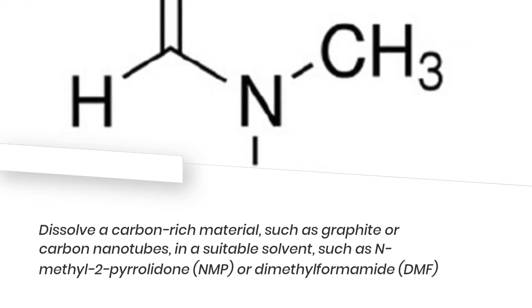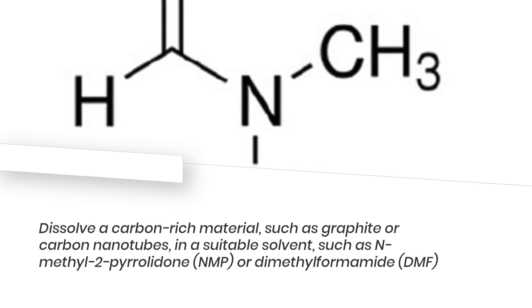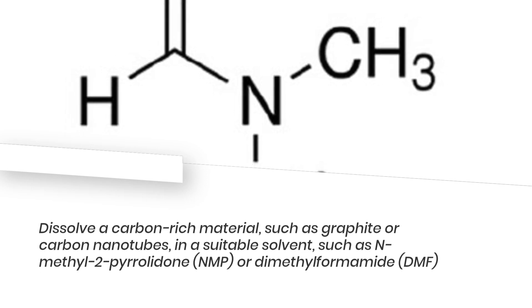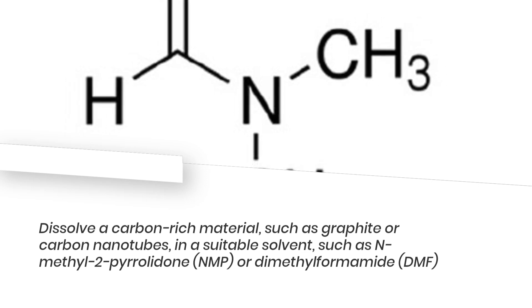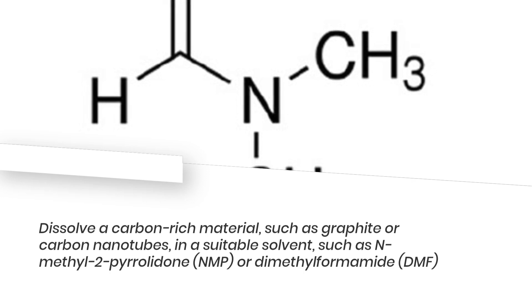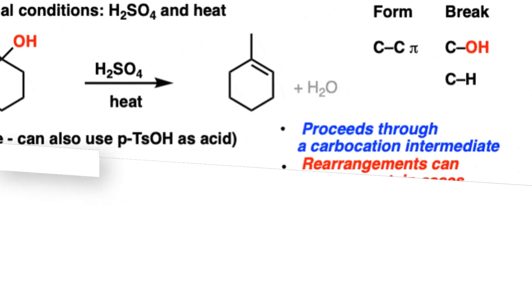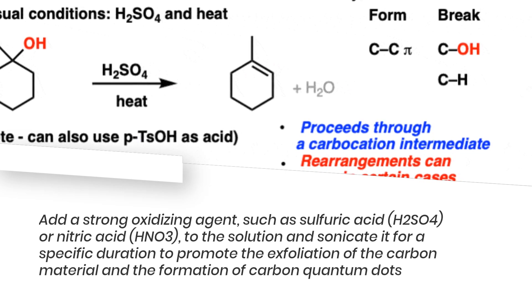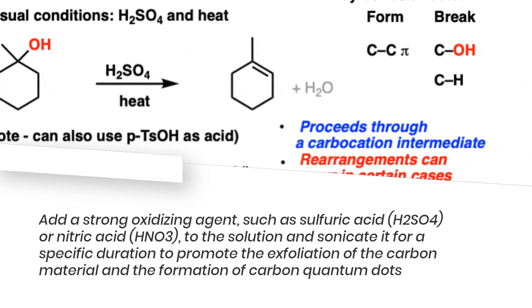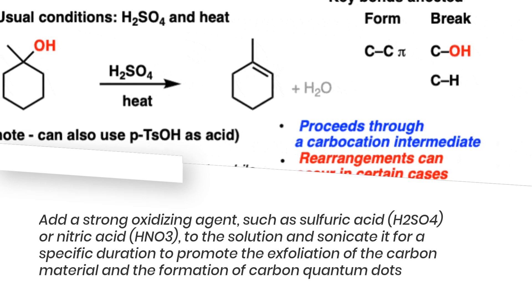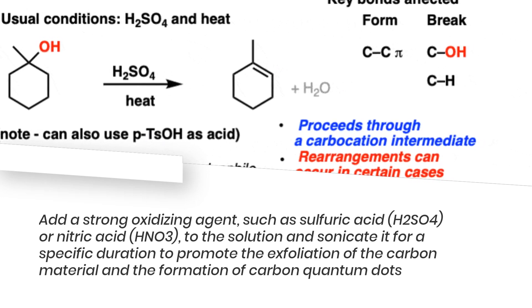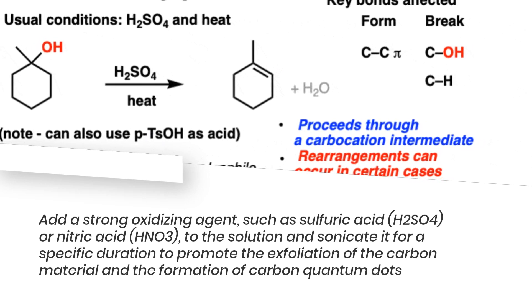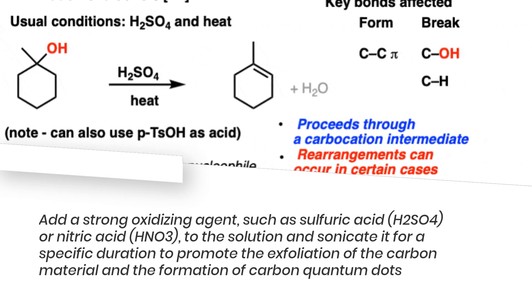Chemical exfoliation: Dissolve a carbon-rich material, such as graphite or carbon nanotubes, in a suitable solvent, such as N-methyl-2-pyrrolidone (NMP) or dimethylformamide (DMF). Add a strong oxidizing agent, such as sulfuric acid (H2SO4) or nitric acid (HNO3), to the solution and sonicate it for a specific duration to promote the exfoliation of the carbon material and the formation of carbon quantum dots.